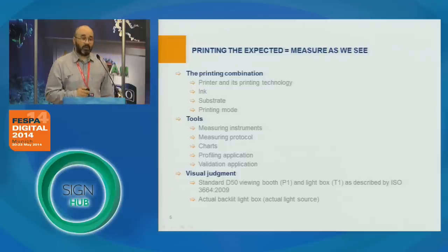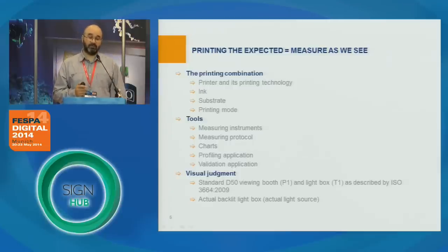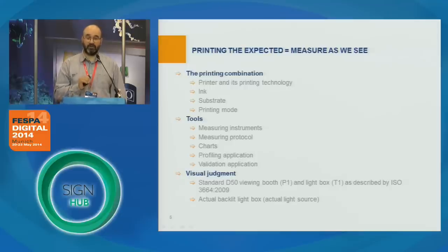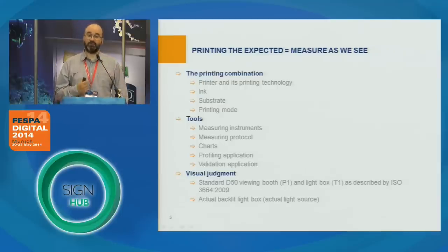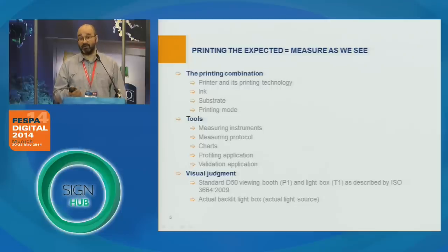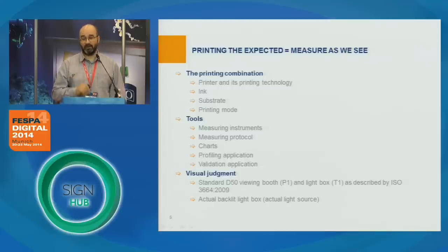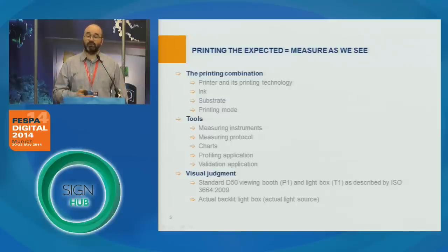One of the key aspects of the 'printing the expected' concept is that it's completely based on 'measure as we see.' The whole metrological process is based on how the viewer actually perceives the reproduction. For that we need to establish a metrological protocol and we need tools like measuring devices, charts, profiling applications, and validation applications — all necessary tools to control our printing combination made of the printing system, the ink, the substrate, and the printing mode. Because we said 'measure as we see,' the viewer is also involved in the assessment of the final product.